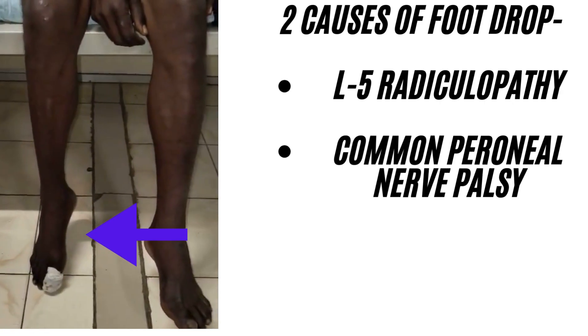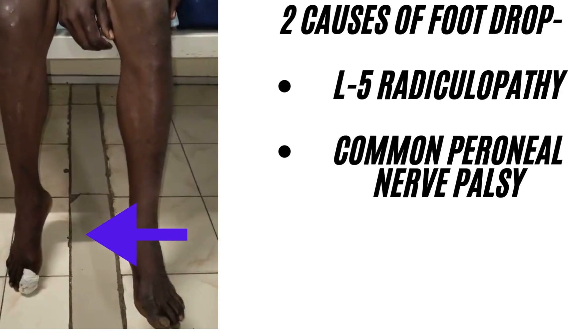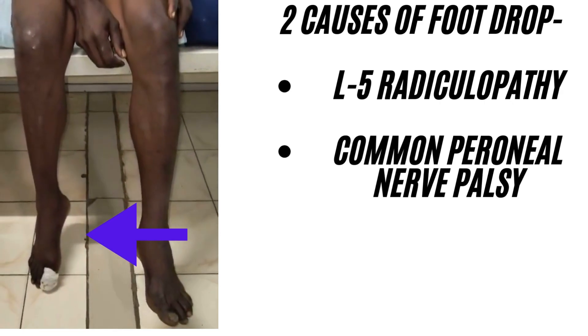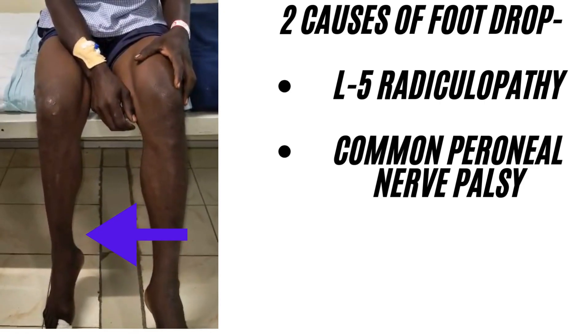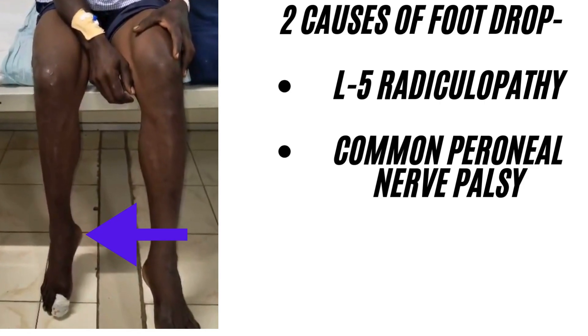In L5 radiculopathy, there is absence of both dorsiflexion and inversion of the foot. Whereas in common peroneal palsy, inversion is intact.